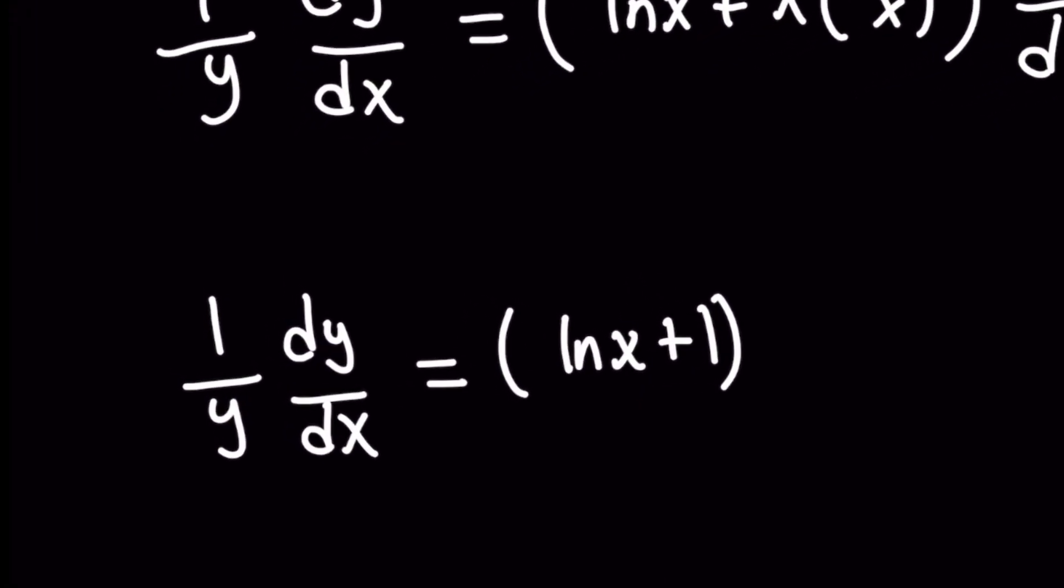Now we're going to have 1 over y times dy/dx equals ln x plus 1. And it still might look a little confusing on the left, but remember though that the main idea of a derivative, implicit or not, is we want to find an expression for dy/dx.